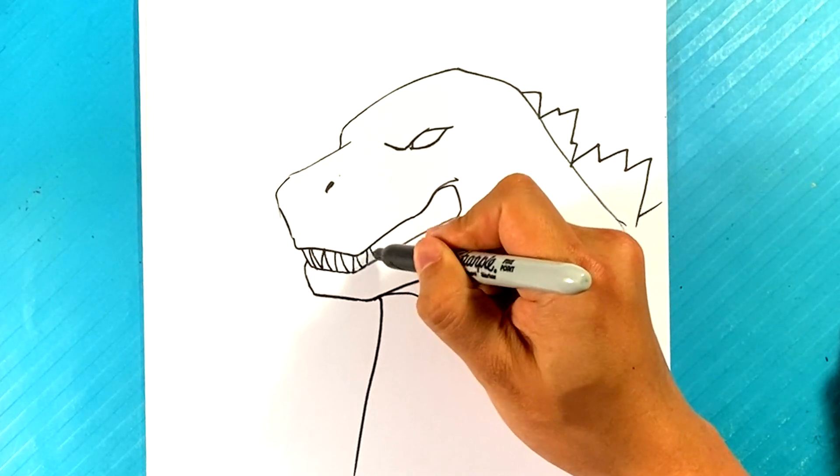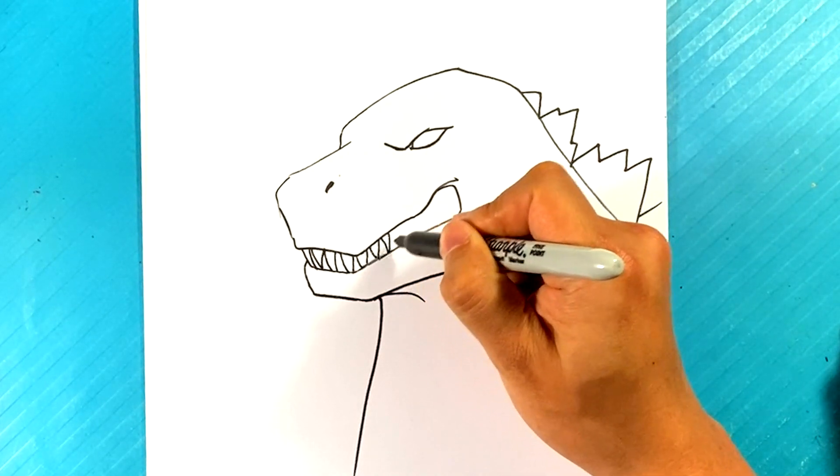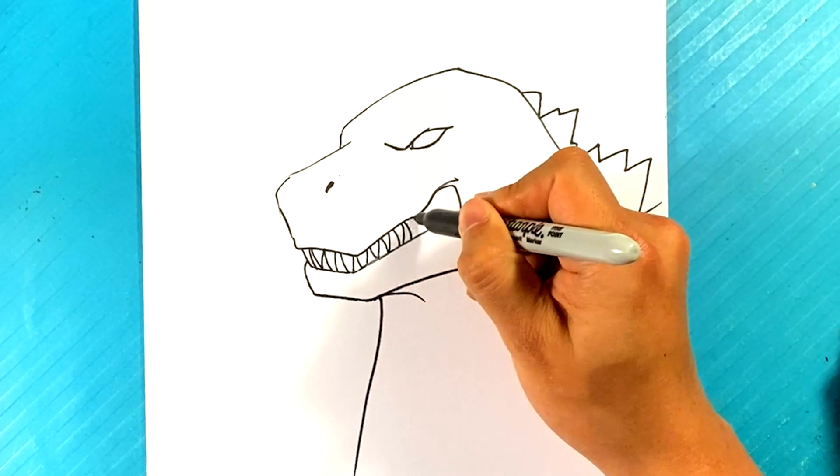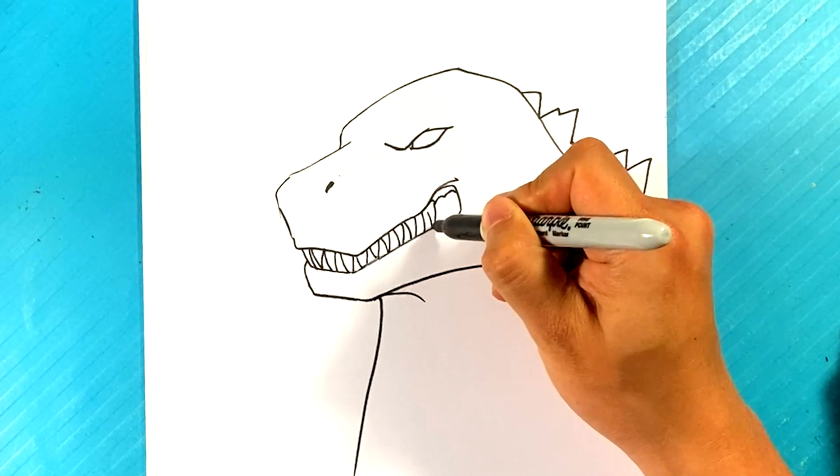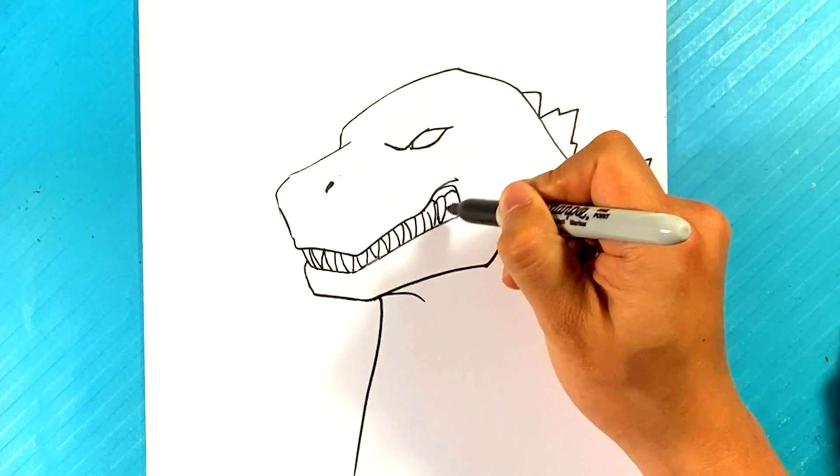So we're going to have this kind of back and forth area here. Maybe around this area you're going to see his gum line a little bit. It really makes it look like he's kind of snarling there, like something's up.